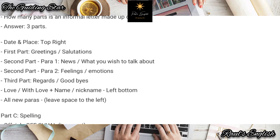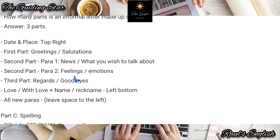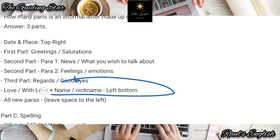The third part is regards and goodbyes. So you can write 'with love,' or 'love,' or 'your friend' — it just depends on the person you're writing to. If you're writing to your friend, you won't say 'with love,' but if you're writing to your sister or grandmother, you can say 'with love.' Then put your name, nickname, or whatever that person calls you at the bottom left side of the letter.